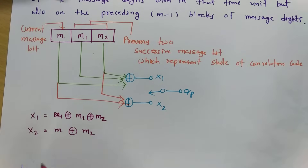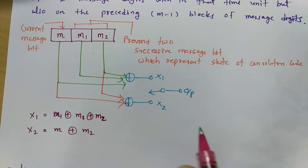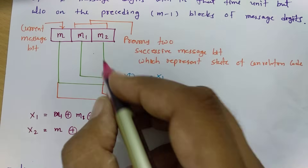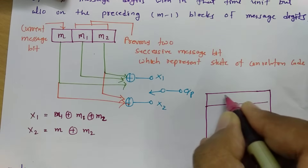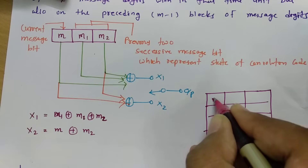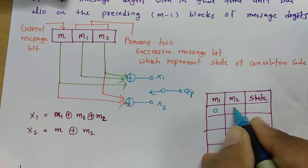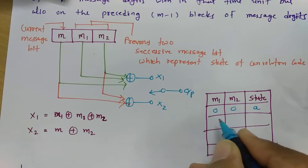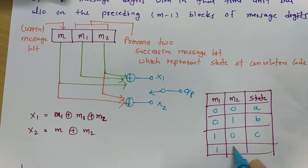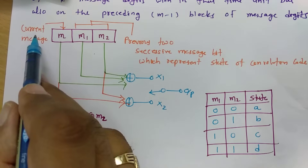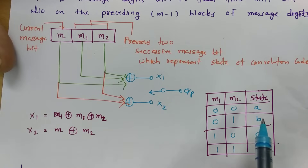This is essentially modulo-2 (XOR) output. Regarding states: M1 and M2 together define the state of this encoder. If M1=0 and M2=0, the encoder is in state A. If M1=0 and M2=1, it is in state B. If M1=1 and M2=0, it is in state C. And if M1=1 and M2=1, it is in state D. As you insert the message stream, these states change. I'll explain the importance of states and the design of convolution encoders in future sessions.